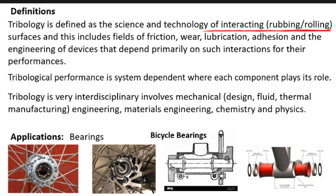Both rubbing and rolling are part of tribology, and primarily it comes down to three important aspects: understanding friction, understanding wear, and lubrication. These three are very important because friction is the starting point — whenever two surfaces are sliding or rolling against each other, there will be friction. Friction leads to wear, and friction and wear are always companions of each other.